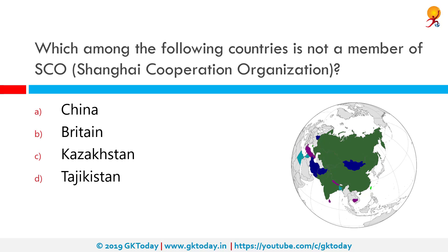Which among the following countries is not a member of the SCO, the Shanghai Cooperation Organisation? Britain is not a member. The Shanghai Cooperation Organisation is a Eurasian political, economic, and security alliance announced on 15 June 2001 in Shanghai by the leaders of China, Kazakhstan, Kyrgyzstan, Russia, Tajikistan, and Uzbekistan. The SCO Charter was signed in June 2002 and entered into force on 19 September 2003.